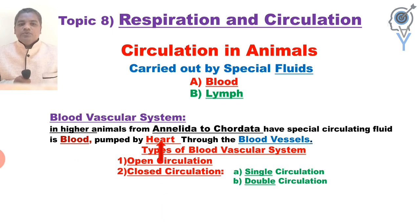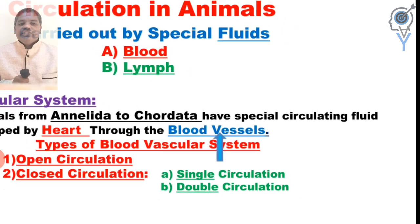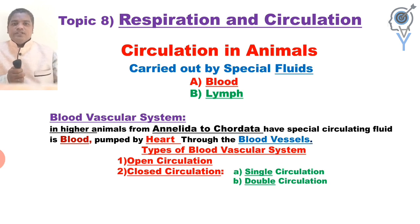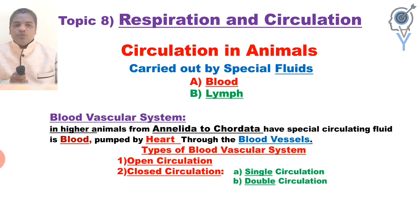In the heart, blood is present and blood vessels circulate the blood. From the blood vascular system, there are different types of blood vascular systems. There is closed circulation, which can be identified in higher organisms.